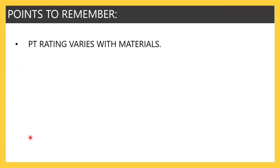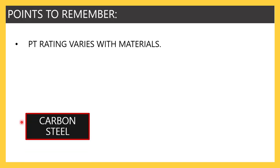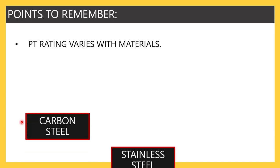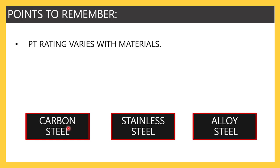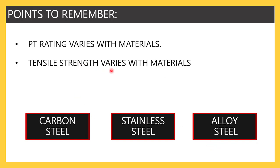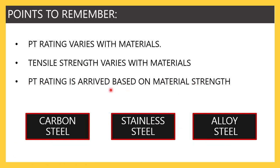Before going further into PT rating, let's understand a few important things. PT rating — pressure temperature rating — varies with materials. We have different materials: carbon steel, stainless steel, and alloy steel, and each has a different tensile strength. If your material strength is weaker, you have to use a different pressure rating combination; if the material strength is higher, you use a different pressure rating. So it varies based on tensile strength. The PT rating is actually arrived at based on material strength.